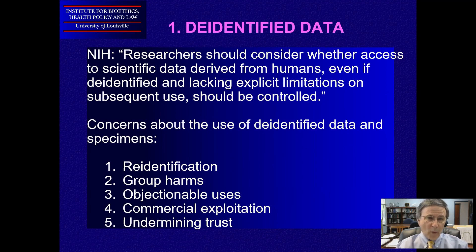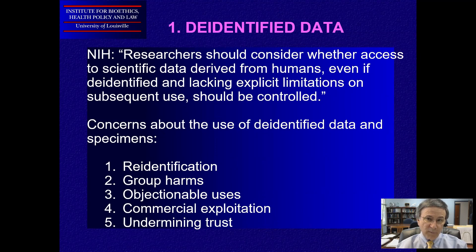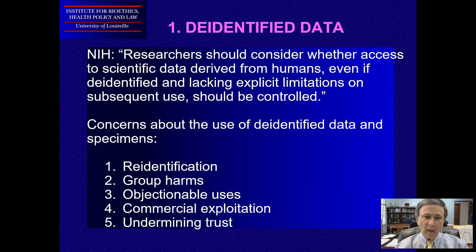In the October 2020 notification of the final policy, NIH said researchers should consider whether access to scientific data derived from humans, even if de-identified and lacking explicit limitations on subsequent use, should be controlled. What this means is that even though it's not going to be required, putting controls on de-identified information, researchers should consider this. I view the word 'consider' as more than just considering — doing what is appropriate, even though it may not be legally mandated.